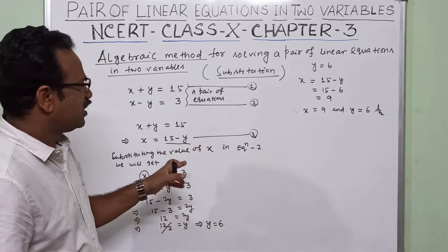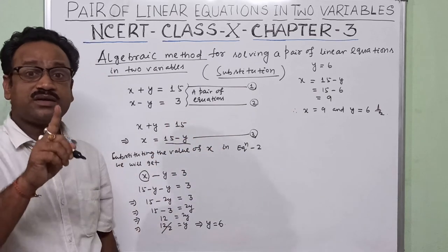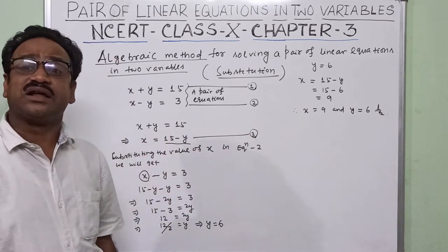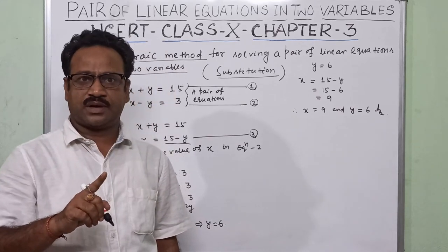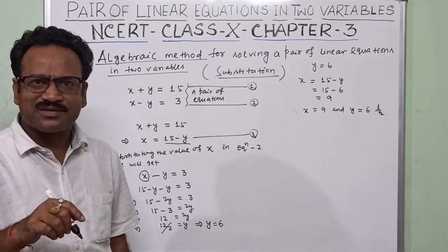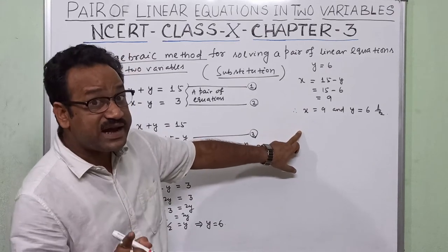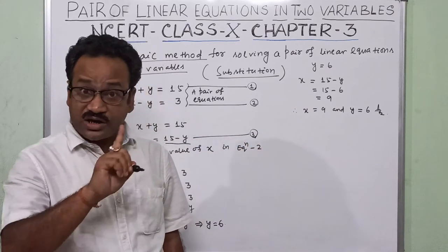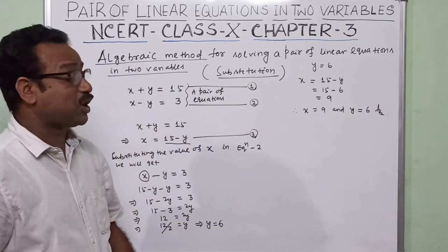Here we have got a unique solution — one solution in common. So we can say these lines are intersecting, consistent, and independent.